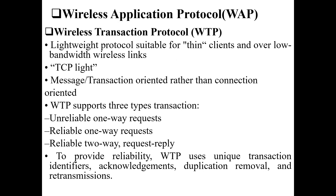WTP is a lightweight protocol suitable for thin clients over low-bandwidth wireless links, using TCP-lite. It is message and transaction oriented rather than connection oriented — whether a connection is established does not matter; only the message and transaction matter. There are three types of transactions: unreliable (destination receipt not confirmed), reliable (one-way confirmation), and reliable two-way request-reply. WTP also provides reliability through unique transaction identifiers, acknowledgments, duplicate removal, and retransmission.